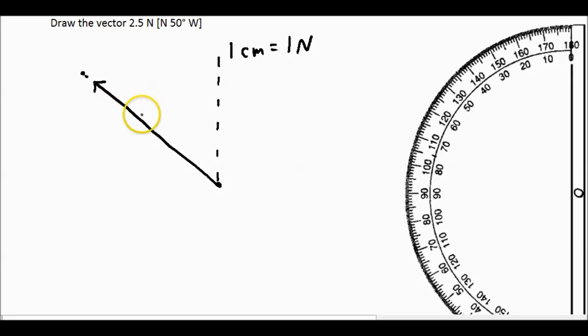It's 2.5 centimeters long on my paper. However, it is pointing to the north and 50 degrees to the west, which is exactly what I want. So from here to here is 50 degrees.